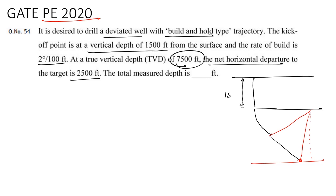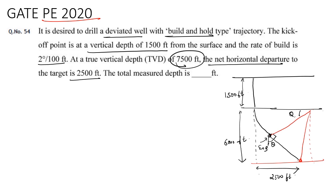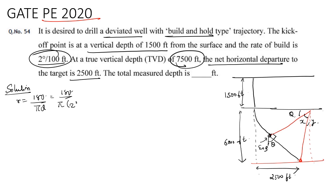The kickoff point is given at 1500 feet and the total vertical depth is given as 7500 feet, so that gives us this section to be 6000 feet. The total horizontal departure is 2500 feet. Let this be the end of build point; let this be theta — if this is theta then this will also be theta. Let this be x and let this be point y. The radius of curvature will be equal to 180 upon pi times theta, giving us 2866 feet. So r equals 2866 feet.